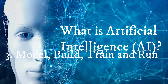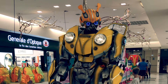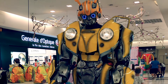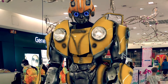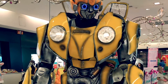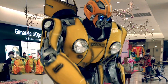What is AI? An overly broad description would be any task performed by a machine that would have previously been considered to require human intelligence. More precisely, artificial intelligence, or AI, refers to the simulation of human intelligence in machines that are programmed to think like humans and mimic their actions. The term may also be applied to any machine that exhibits traits associated with the human mind, such as learning and problem solving.